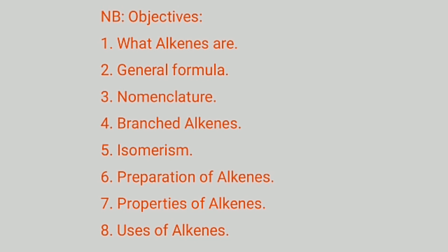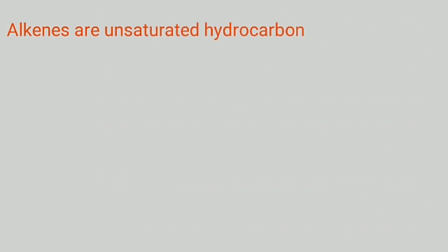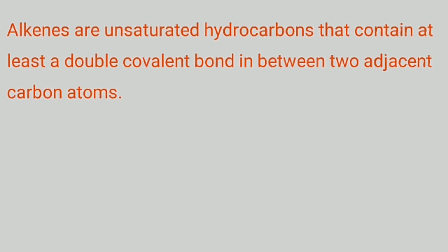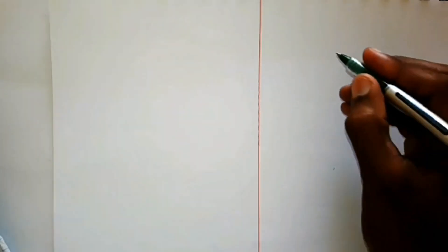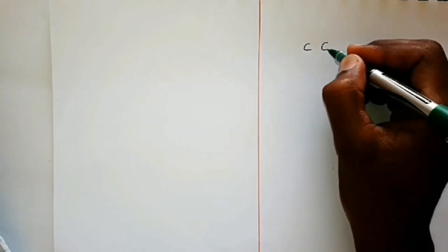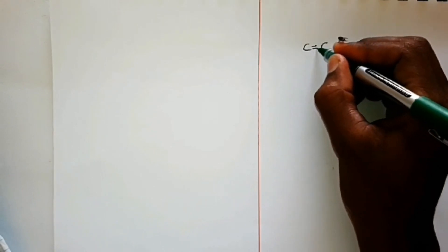We will also cover properties and finally uses of alkenes. Let us begin: alkenes are unsaturated hydrocarbons that contain at least a double covalent bond in between two adjacent carbon atoms. This is how alkenes are illustrated — you have two adjacent carbon atoms with a double bond between them.